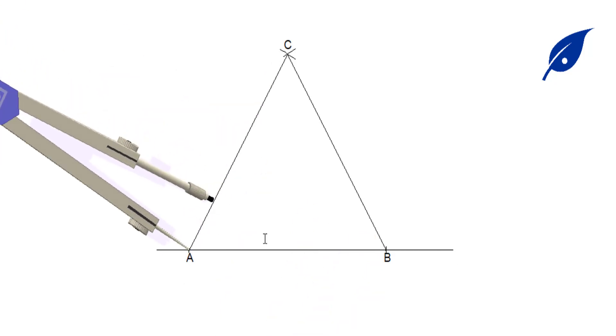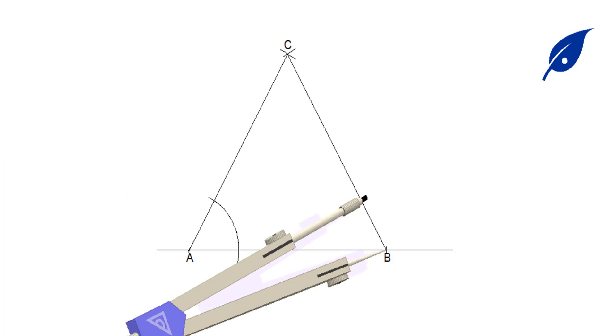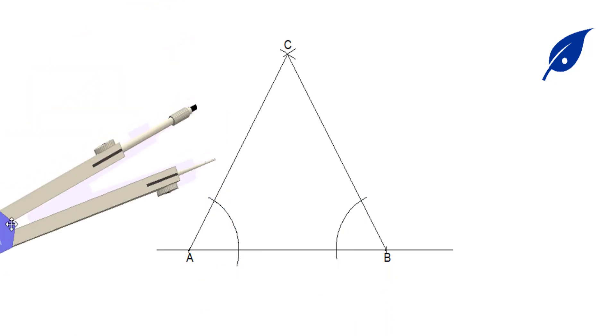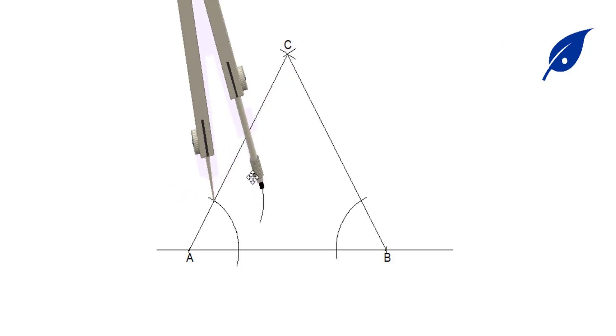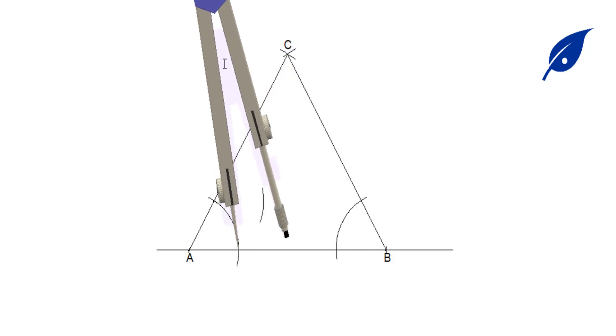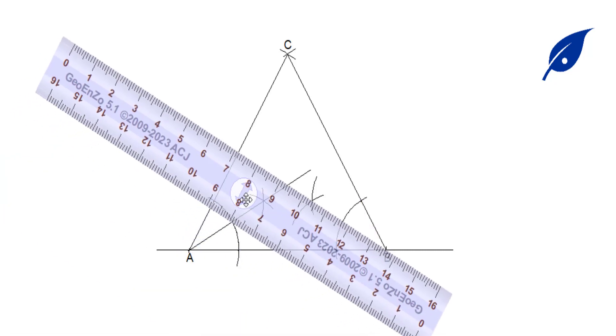We'll bisect angle CAB and angle CBA. At this point we are bisecting angle CAB. The next thing is to bisect angle CBA, then draw the line. It will meet the initial line we drew when bisecting angle CAB.